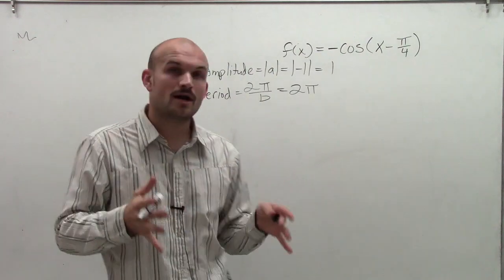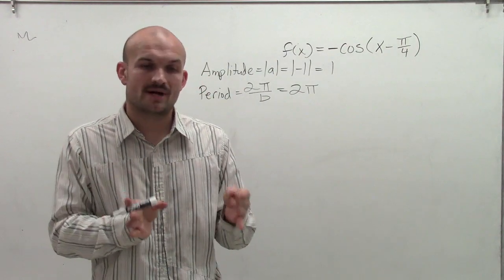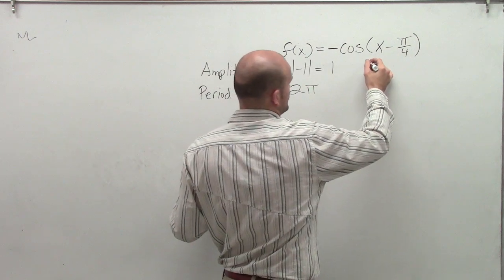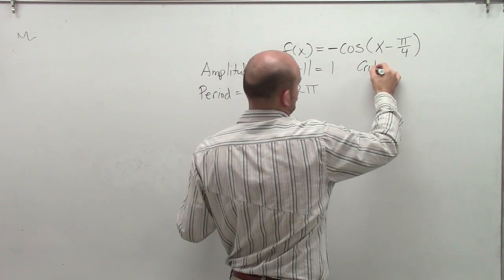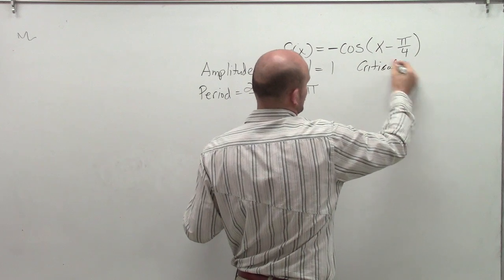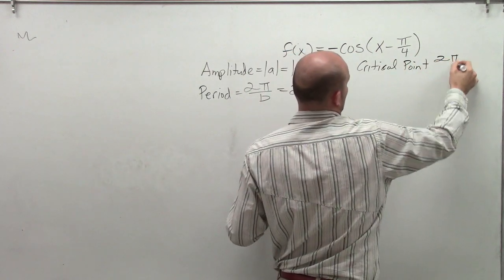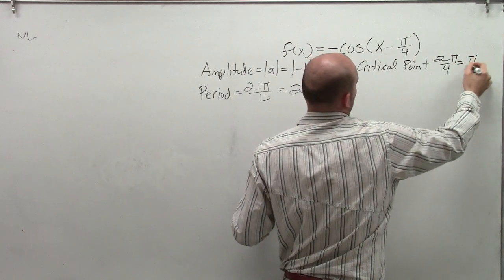The next thing is we want to determine what are the critical points, or what is the distance between our critical points. So to do that, what I'm going to do is I'm going to take 2 pi, because that's our period, and I'm just going to take our period and divide it by 4, which equals pi halves.